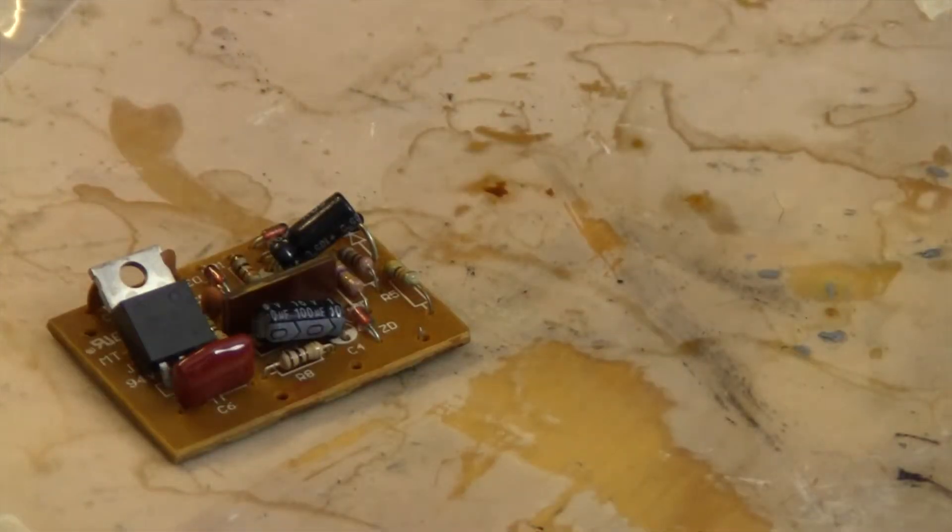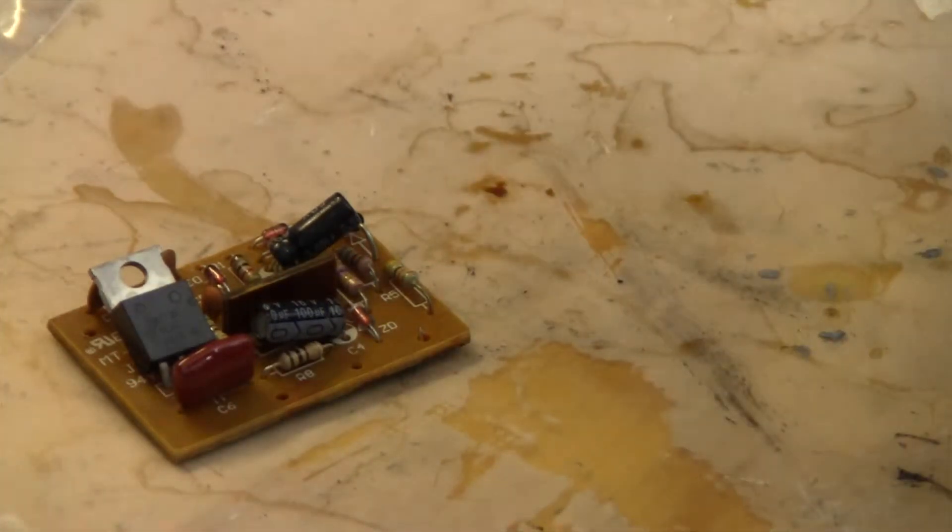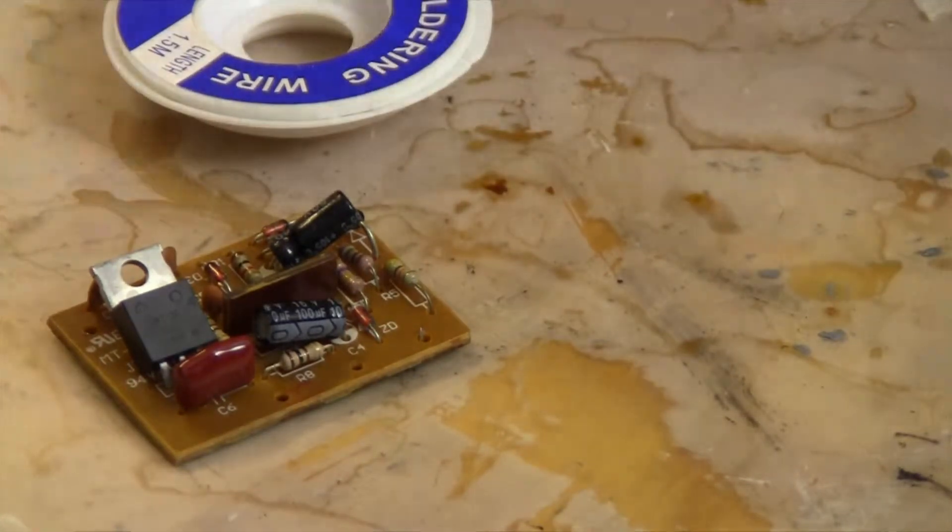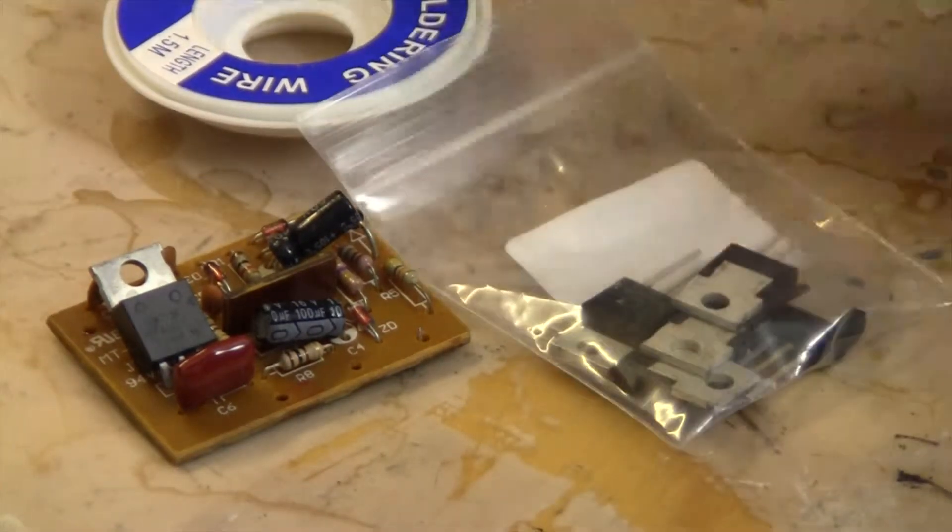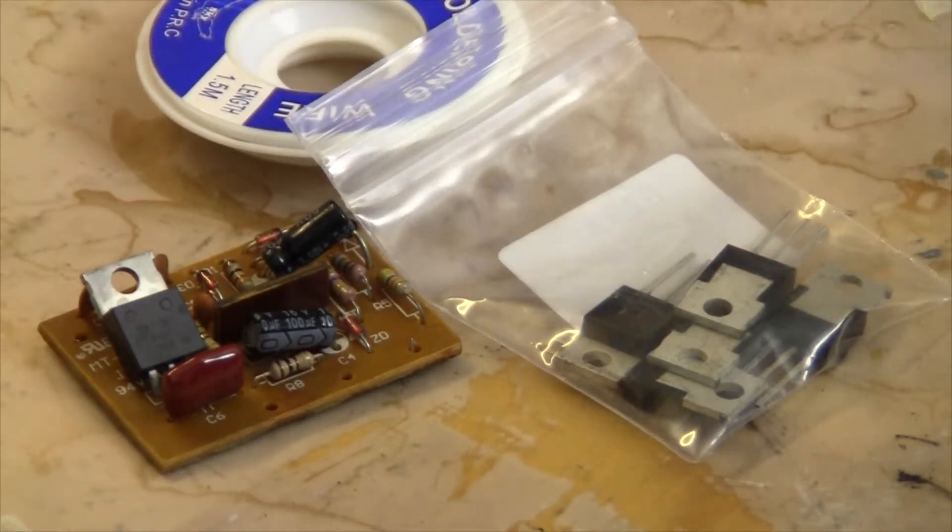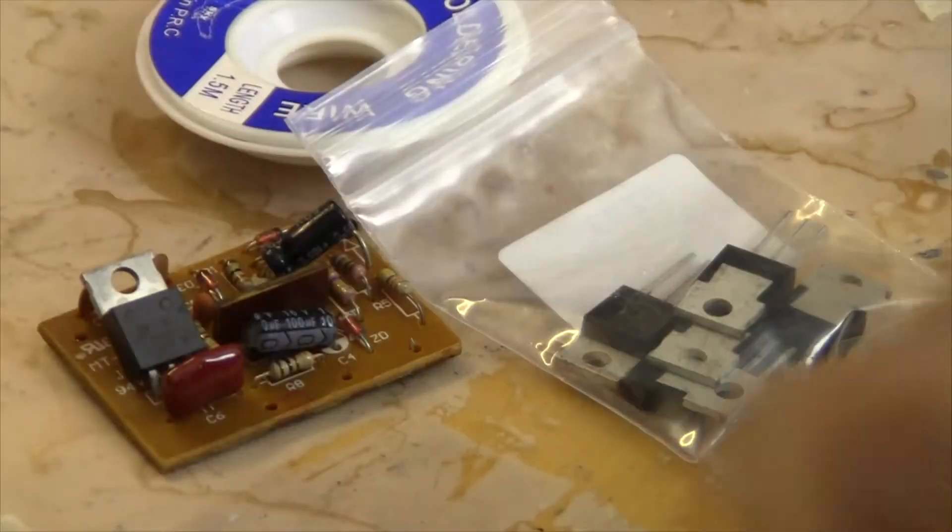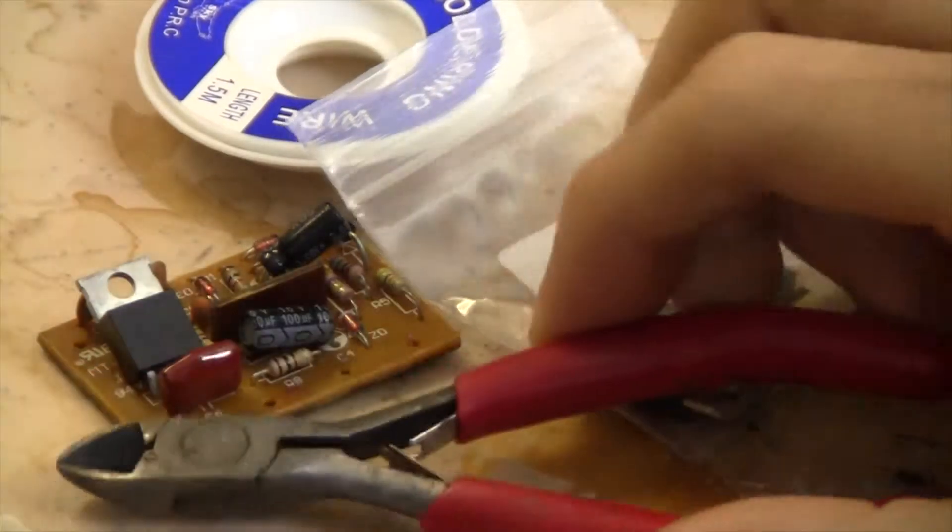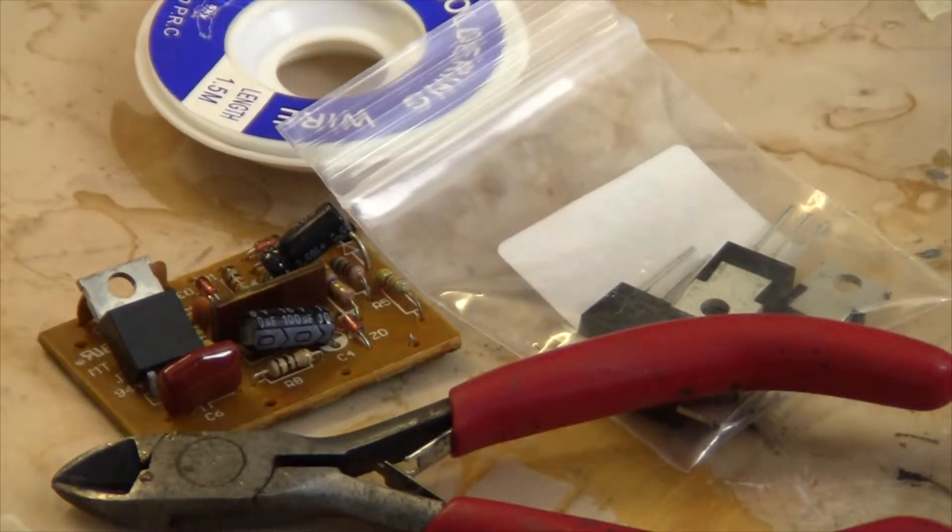Hello and welcome to part two of the touch lamp repair. Today I'm going to be replacing the Triac which I found in the previous video to be shorted out. So I bought some more replacement Triacs. It is the BT 136-600E Triac. I got five of them. I'm just going to have some spares because they're probably going to be useful in the future.